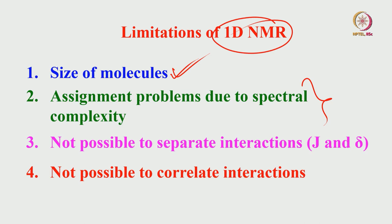Next, it is not possible to separate the interactions J and delta — chemical shift and J-coupling — in a 1D NMR. Both are present simultaneously. When you take a 1D NMR spectrum and analyze it, you see the chemical shift, but the peak also has a multiplicity pattern because of J-coupling. So both are present, and you cannot separate them in 1D. When you can separate these two interactions, your spectrum analysis becomes easier.